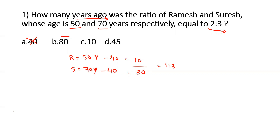Looking at option B, if you try to subtract 80 from either of the present ages of 50 and 70, both will turn out to be a negative value. A negative value of age doesn't exist, so we can directly say option B is not the right answer. Now going for option C, which is 10 — let's check it out.